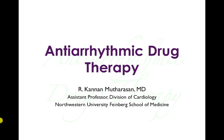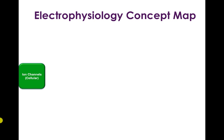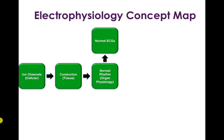What I want to do is lay out the whole concept map of electrophysiology and what you've been learning about over this past week. You start out with ion channels, which is really understanding electrophysiology at a cellular level. Then you move on to understanding how conduction occurs, which is electrophysiology at the tissue level. Then you move on to understanding the normal rhythm — how does the normal heartbeat occur — which is physiology at the organ level. An important manifestation of that is how a normal electrocardiogram looks.